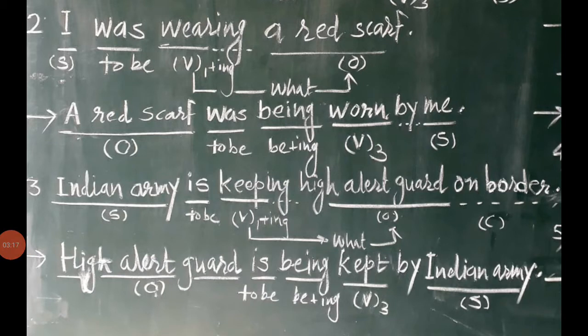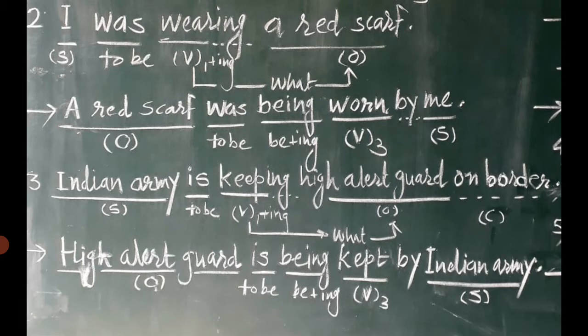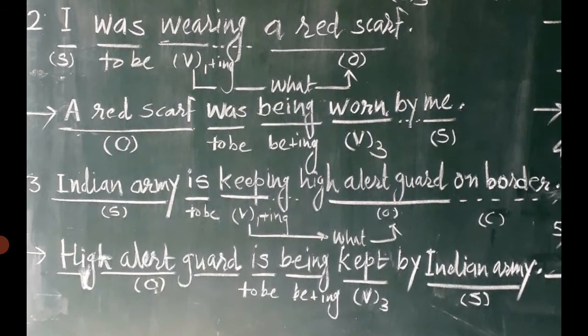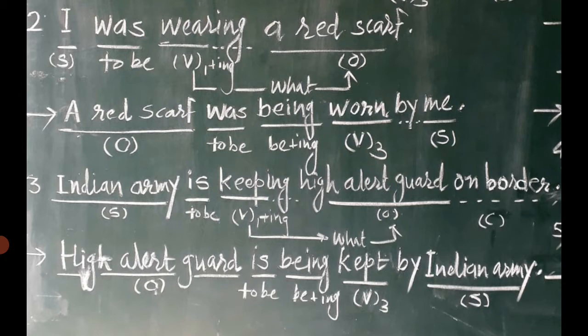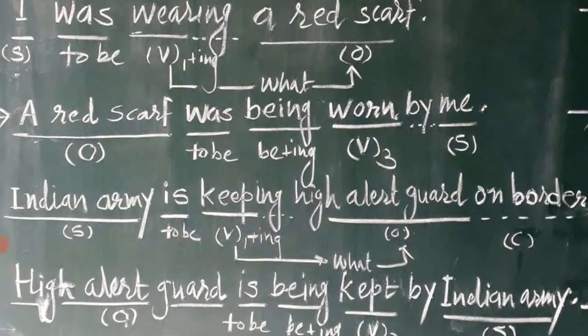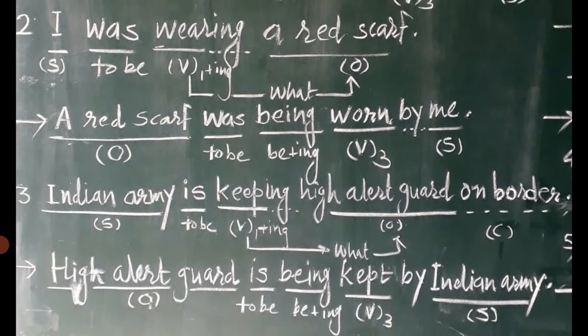Another example is: I was wearing a red scarf. This sentence is picked up from a lesson of 11th standard. It is of past continuous tense. As usual, it is labeled: subject, then to be's form was, then wear plus ing — wearing. Again, the question what, and the answer is a red scarf. So the object a red scarf is kept in place of the subject. Later on, to be's representative was is chosen, as a red scarf is singular. Afterwards, being is put there to denote continuous tense.